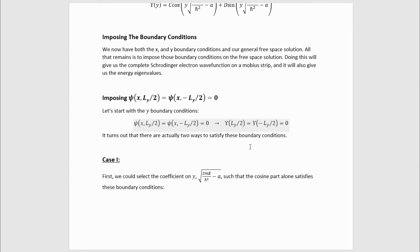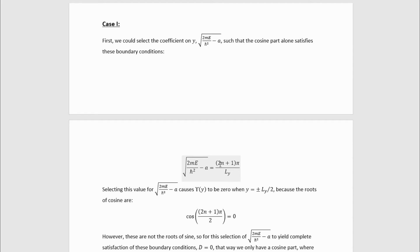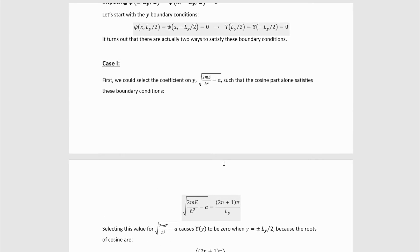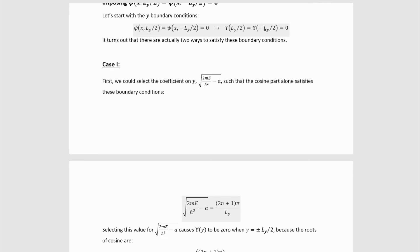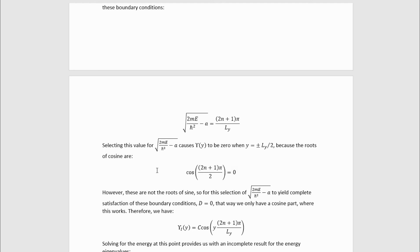And there are actually two ways to satisfy this boundary condition, so we'll have two separate cases. First, we could select the coefficient of y, the argument, namely this quantity, to be a value such that the cosine part alone satisfies this boundary condition. This would correspond to this selection of the value. And the reason why that's true is because if we plug this value in, the ly will cancel the ly in the denominator and deliver a factor of 2 in the denominator, turning this quantity into the roots of cosine. Therefore, the boundary conditions are satisfied. The unfortunate part is that cosines and sines do not have any of the same roots. So this thing actually is not the roots of sine and none of the sine roots are the roots of the cosine.